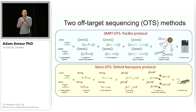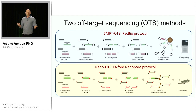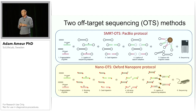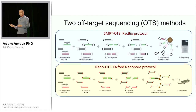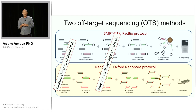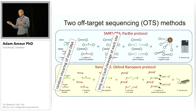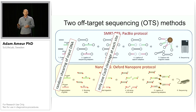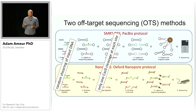We have one protocol based on PacBio sequencing — we call this Smart OTS, where OTS stands for off-target sequencing. We also have a protocol for nanopore sequencing, which is called Nano OTS. Two things worth noting: we use random shearing of DNA at the first step, so no restriction enzyme is involved, and we use one single guide RNA for targeting, as opposed to methods that use two guide RNAs to enrich for a region.